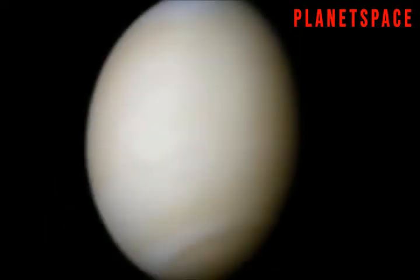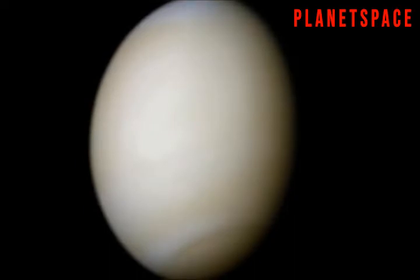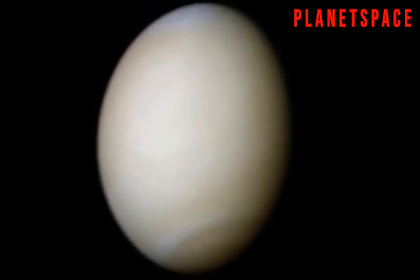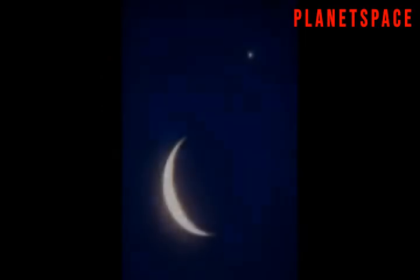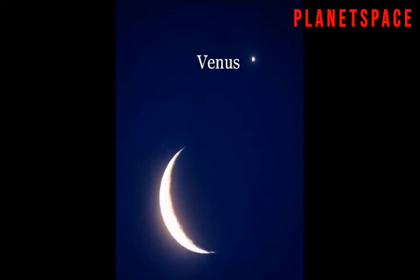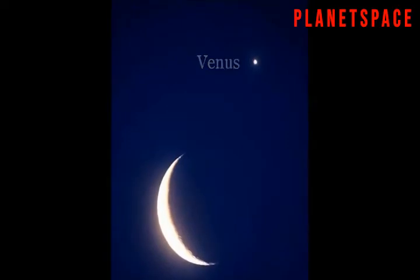Venus might not be fun to visit, but it is beautiful to look at. It is the second brightest object in the night sky. The only thing brighter is the moon. If you are looking at a sunrise or a sunset and suddenly notice what looks like a very bright star, you are probably looking at Venus.